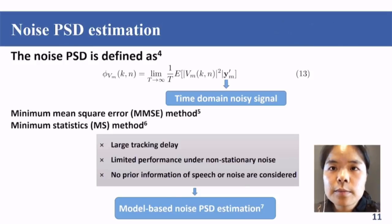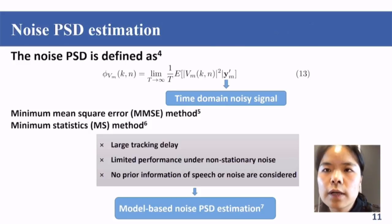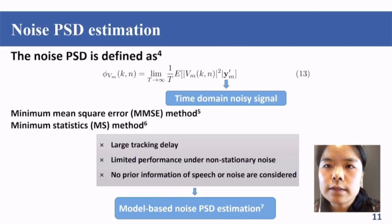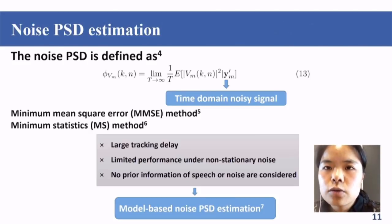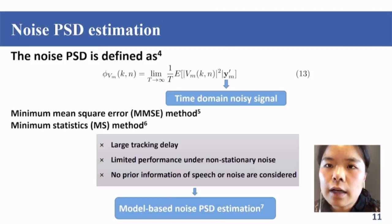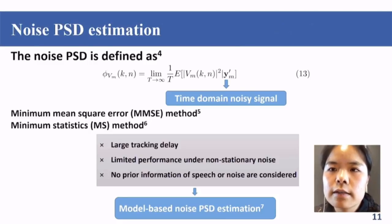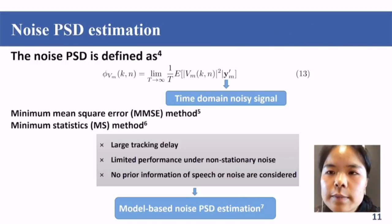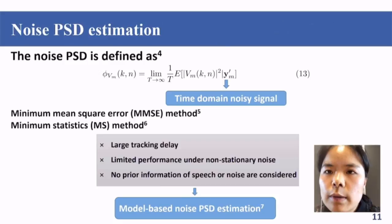Previously we assumed the signal power spectral density is known; here I will show how to estimate it. The noise PSD is defined as follows. Traditional methods like the Minimum Mean Square Error (MMSE) method and the Minimum Statistics (MS) method can be used, but they have three drawbacks: large tracking delay, limited performance under non-stationary noise, and no prior information of speech or noise is considered. So we use model-based noise PSD estimation to overcome these drawbacks.